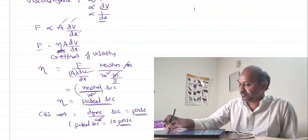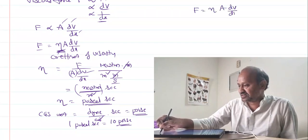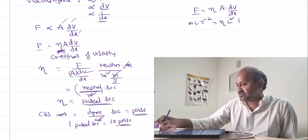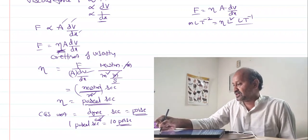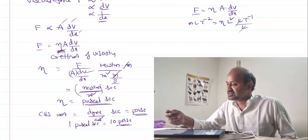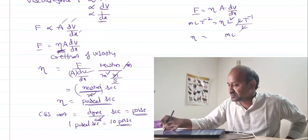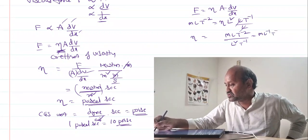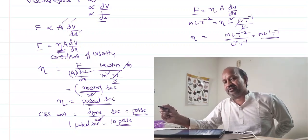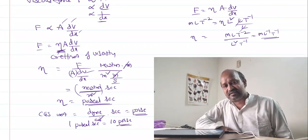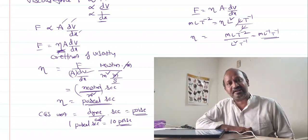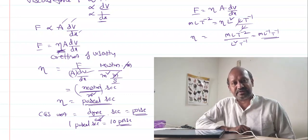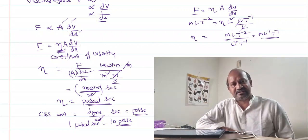Let's write the dimensional formula. Viscous force equals eta times area times dv by dx. Force has dimensional formula MLT⁻². Area is L². Change in velocity is LT⁻¹, and dx is length L — so L and L cancel. Therefore the coefficient of viscosity has dimensional formula ML⁻¹T⁻¹. That's how we find the units and dimensions of coefficient of viscosity. The central point is: while fluids are moving, there is opposition inside, measured with a property called viscosity, quantified by the coefficient of viscosity. Thank you for watching.